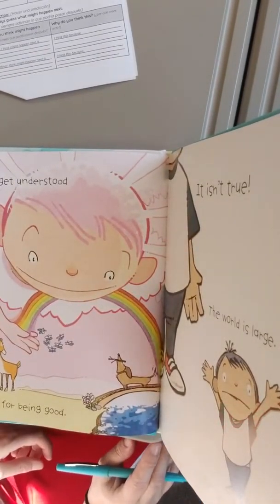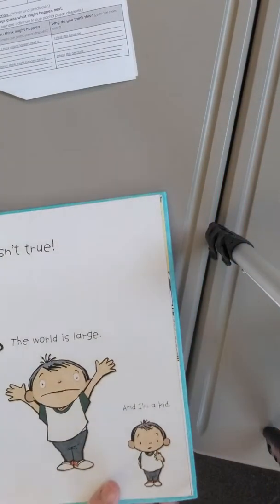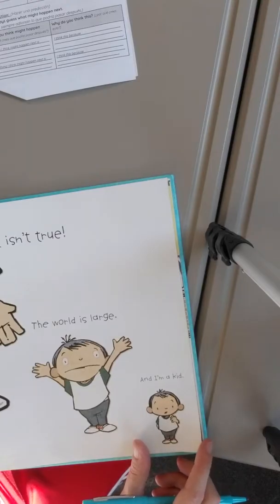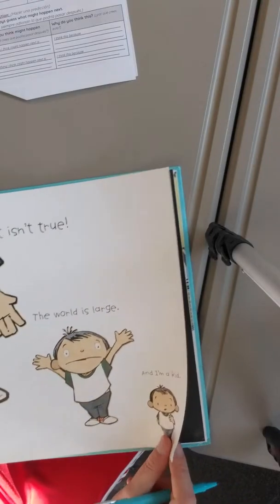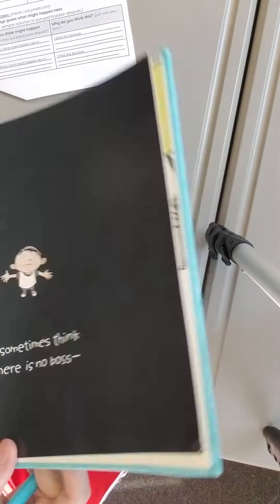Happy things get understood as his reward for being good. It isn't true. The world is large and I'm a kid. I'm not in charge.